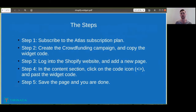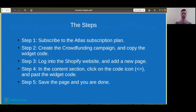The steps you're going to need to take: first, you need to subscribe to an Atlas subscription plan — just go to thenation.com, go to pricing, and choose the Atlas subscription plan that is best suited for you. Next, you need to create a crowdfunding campaign, and this is quite easy — I'm going to show you guys a demonstration on all the steps you need to fill out.